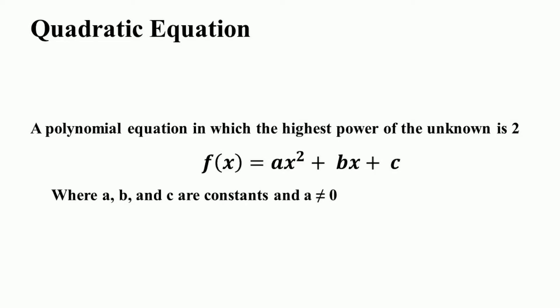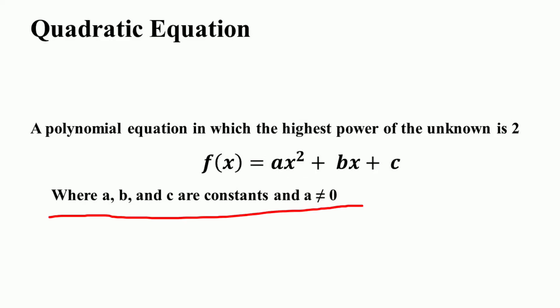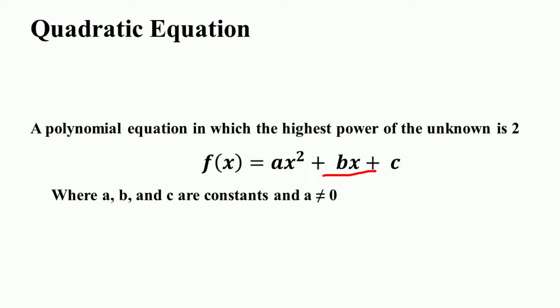The quadratic equation is a polynomial equation in which the highest power of the unknown is 2. The general form is f(x) = ax² + bx + c, where a, b and c are fixed numerical constants, and b and c can be 0. But if a = 0, there is no x² term and it is not quadratic. Here ax² is the quadratic term, bx is the linear term, and c is the constant term.